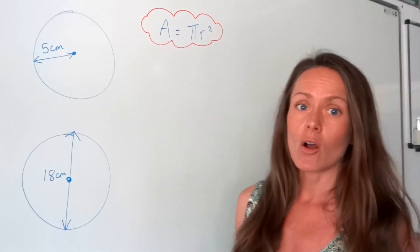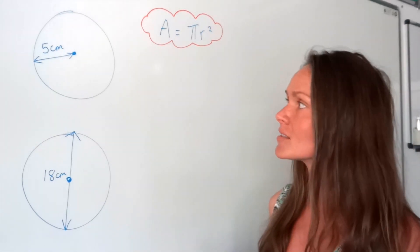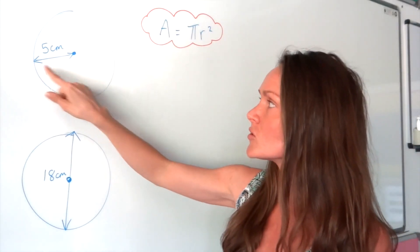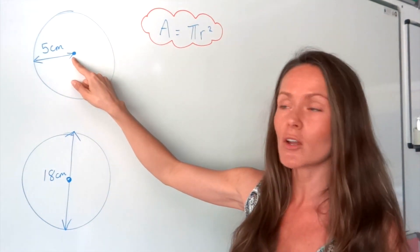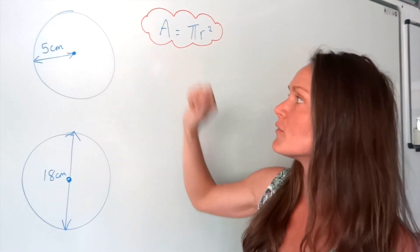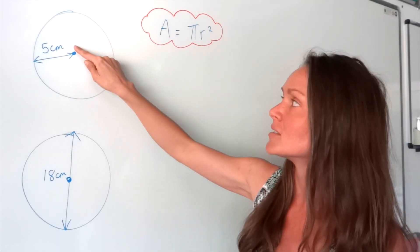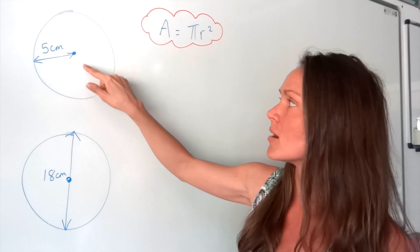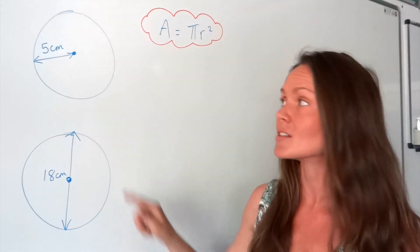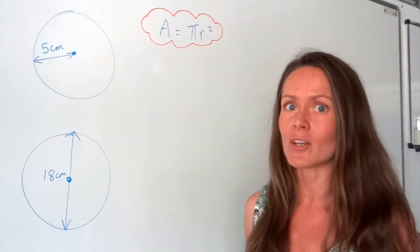Now, the radius of a circle is just the distance from the circumference to the centre of the circle, and it's the same wherever you look on the circle. So this distance from the circumference to the centre would also be 5, and the same here. So it's just the distance halfway across the circle.